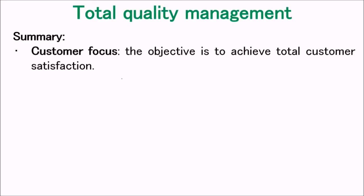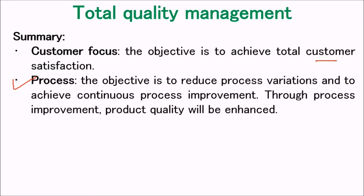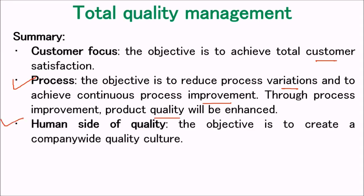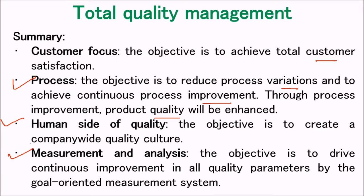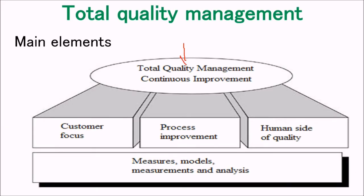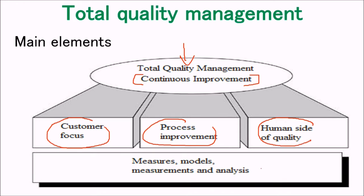The summary of TQM includes customer focus — the objective is always to achieve total customer satisfaction — and the process, where we want to reduce process variations and achieve continuous process improvement, through which product quality will be enhanced. The human side of quality is the organization-wide quality culture. Measurement and analysis aims to drive continuous improvement in all quality parameters by a goal-oriented measurement system. The main elements are customer focus, process improvement, and the human side of quality, with measures, models, and analysis at the base.